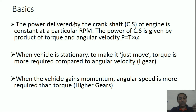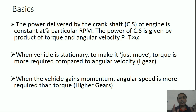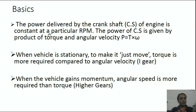The power delivered by the crankshaft of an engine is constant at a particular RPM. At a particular RPM, the power coming out is of a particular magnitude. The power of the crankshaft is given by the product of torque at the crankshaft and the angular velocity — that is, Power = Torque × Angular Velocity.